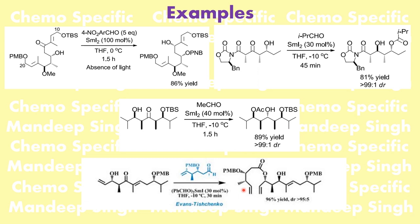In the fourth example, the beta-hydroxy ketone is reduced and the large aldehyde unit is installed as an ester linkage. The relationship between the two hydroxyls is trans. This sets up a ring-closing metathesis in the next step. PMB groups are tolerated under these reaction conditions, other stereocenters are not altered, and the diastereoselectivity is greater than 95:5.